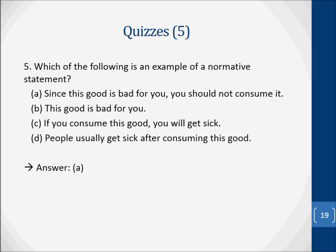Question five: which of the following is an example of a normative statement? A. Since this good is bad for you, you should not consume it. B. This good is bad for you. C. If you consume this good, you will get sick. D. People usually get sick after consuming this good. The correct answer is A — 'Since this good is bad for you, you should not consume it' is a normative statement because it makes a value judgment about behavior.